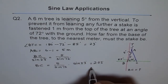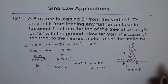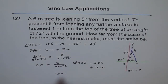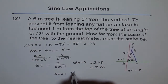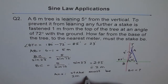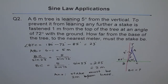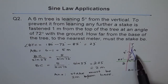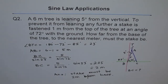Rounding to the nearest meter, BC equals 2 meters. So point C — the stake — must be two meters from the base of the tree. The most important steps are: draw a neat sketch, label it, find all the angles, then apply your formula to get the answer.